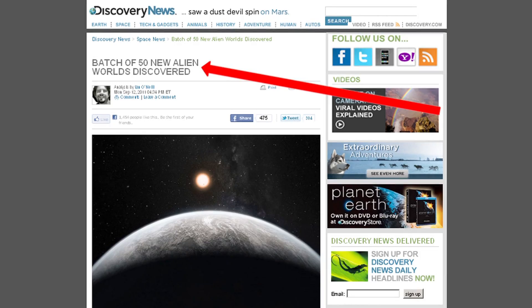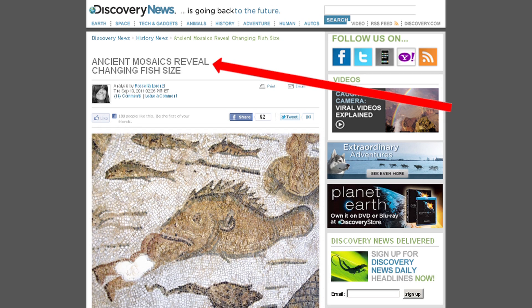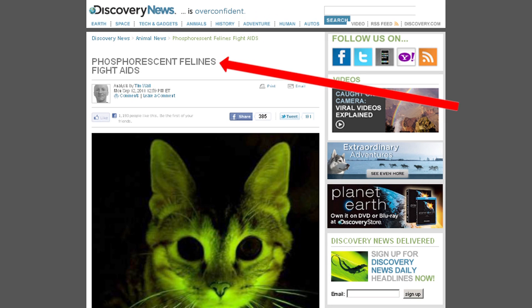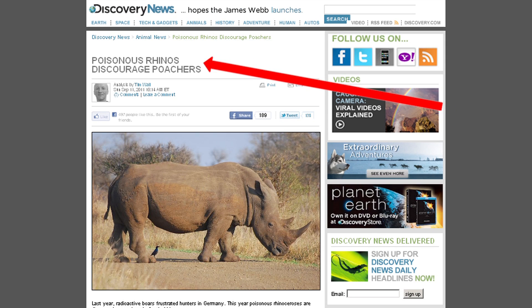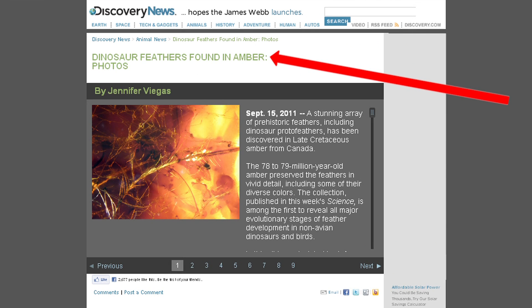We publish stories on 50 new alien worlds, ancient mosaics that reveal changing fish size, a planet with two suns, glowing felines fighting AIDS, poisoned rhino horns that deter poachers, and photos of dinosaur feathers preserved in amber.